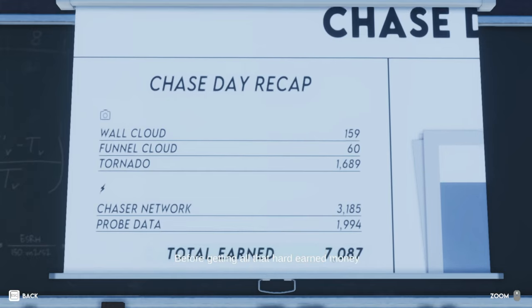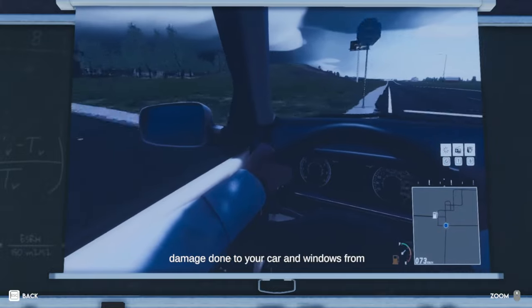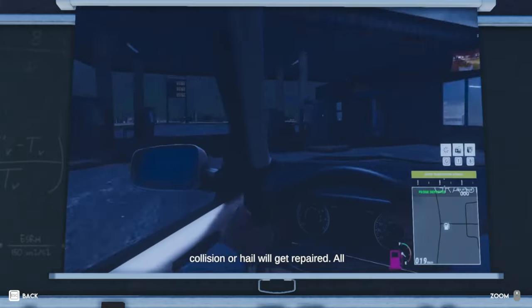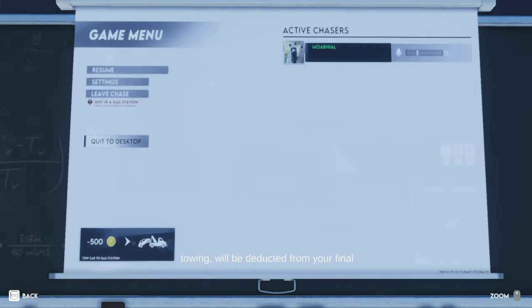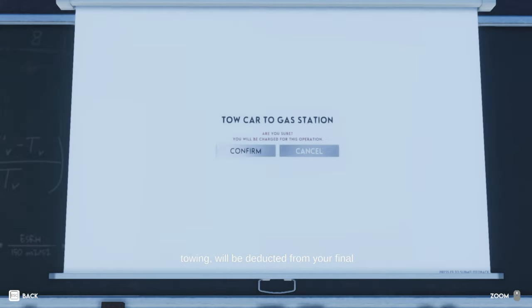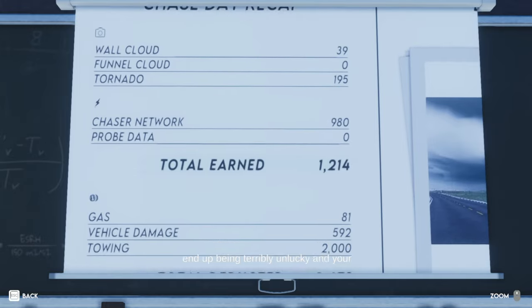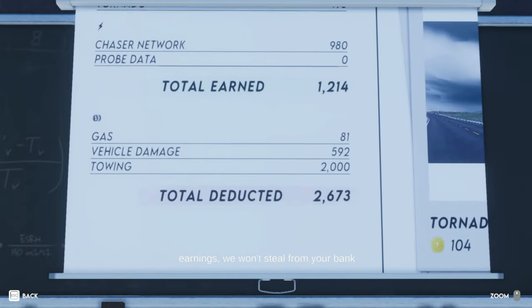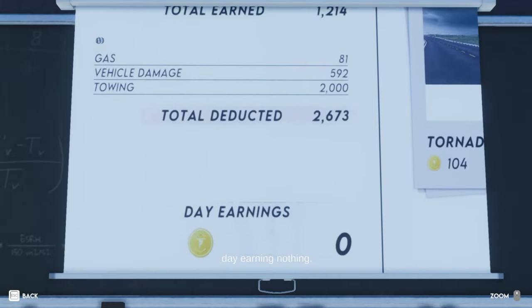Before getting all that hard-earned money home, you'll get some deductions at the end of your chase. All the damage done to your car and windows from collision or hail will get repaired. All the money spent on fuel, including topping up your gas tank, and emergency towing will be deducted from your final earnings at the end. If you end up being terribly unlucky and your deductions end up being more than your earnings, we won't steal from your bank account. And you'll just end your chase day earning nothing.